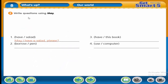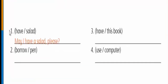Activity two: write questions using 'May I.' The best approach is to make polite requests using 'May I.' Number one: using the words 'have' and 'salad' — 'May I have a salad please?' Number two: using 'borrow' and 'pen' — 'May I borrow your pen please?' Use the word 'please' at the end because this is a polite request.